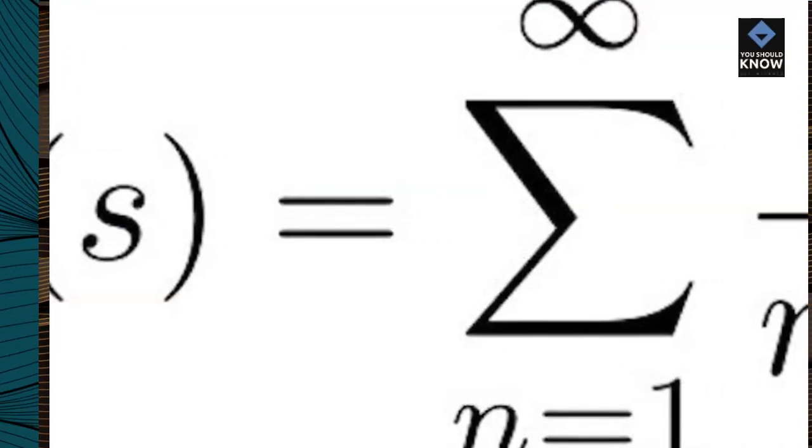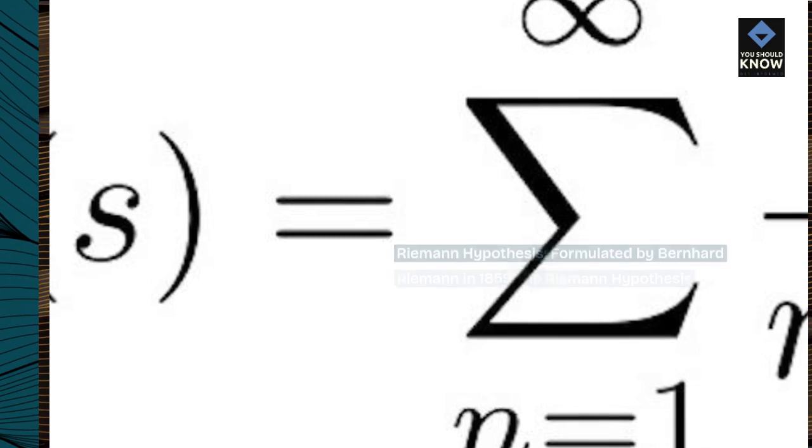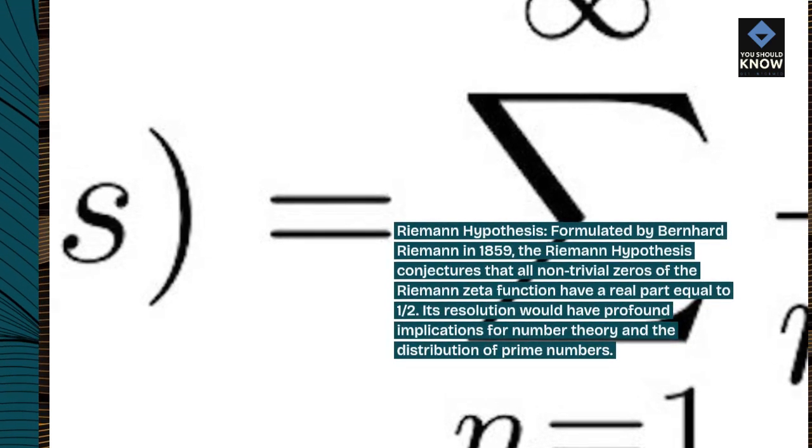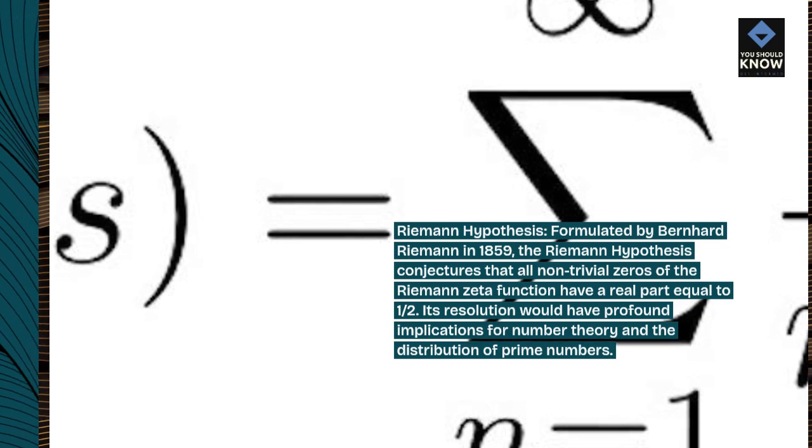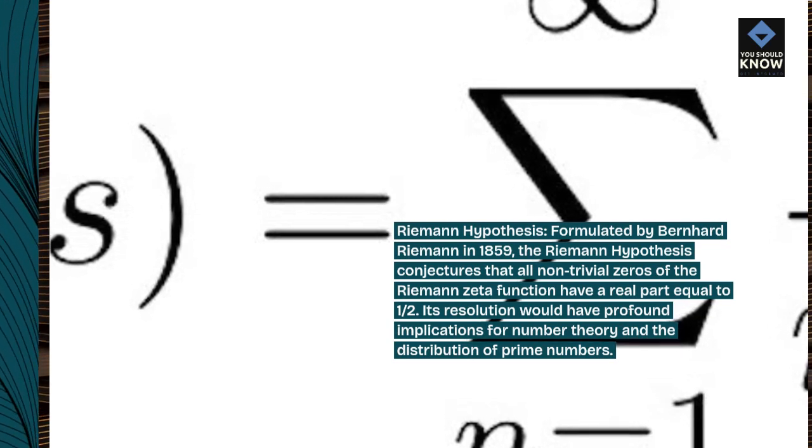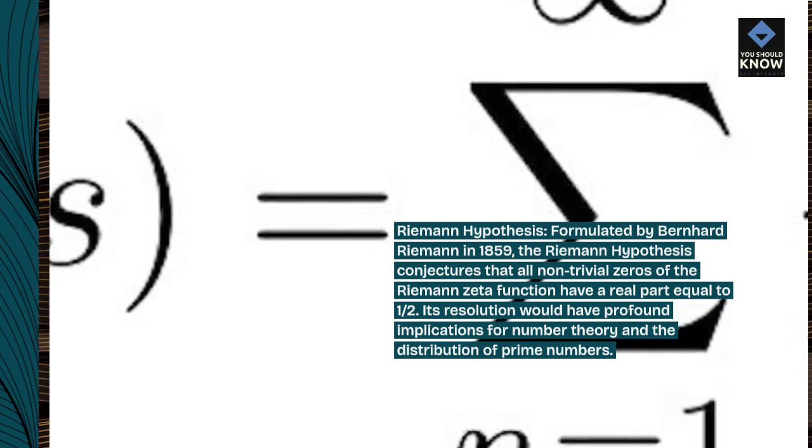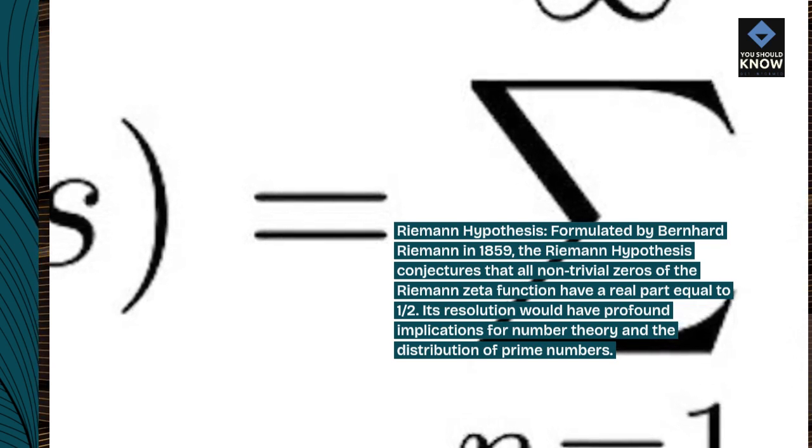Riemann Hypothesis: Formulated by Bernhard Riemann in 1859, the Riemann hypothesis conjectures that all non-trivial zeros of the Riemann zeta function have a real part equal to one-half. Its resolution would have profound implications for number theory and the distribution of prime numbers.